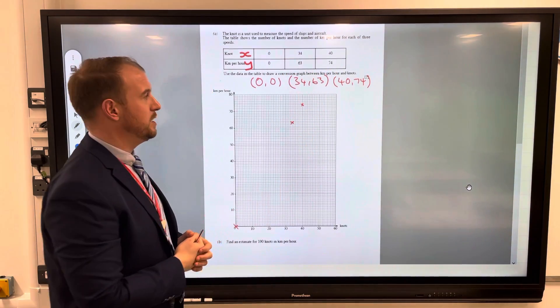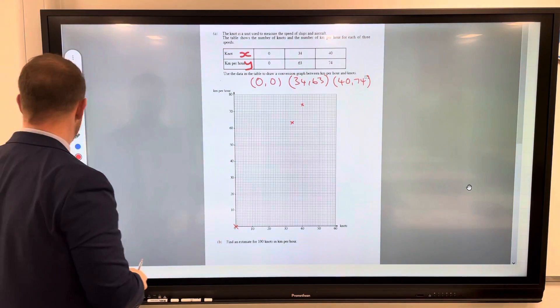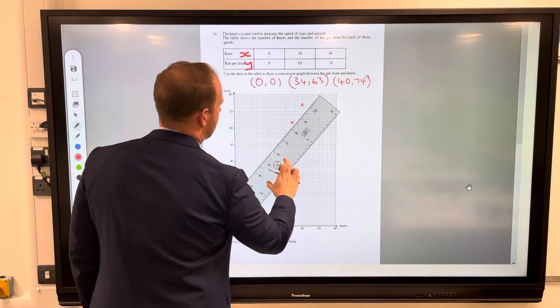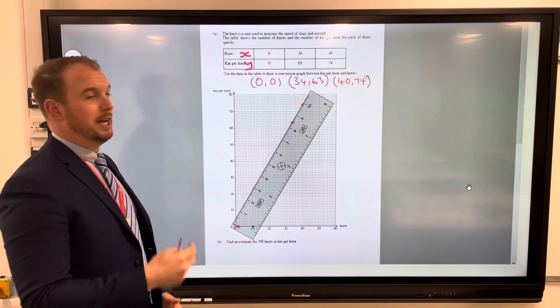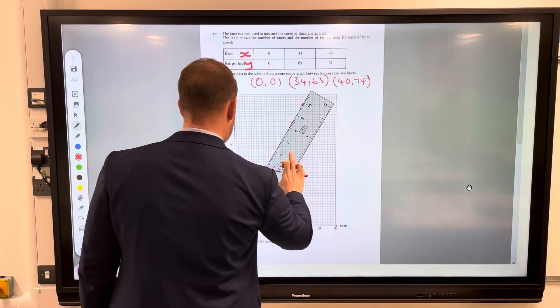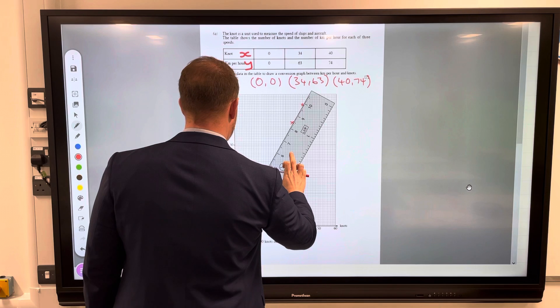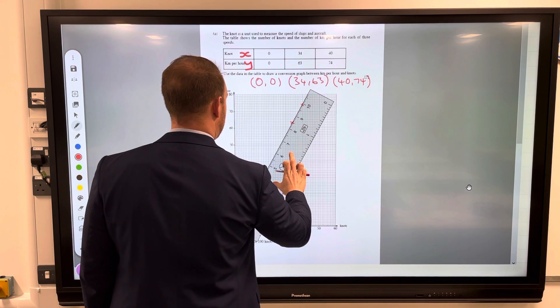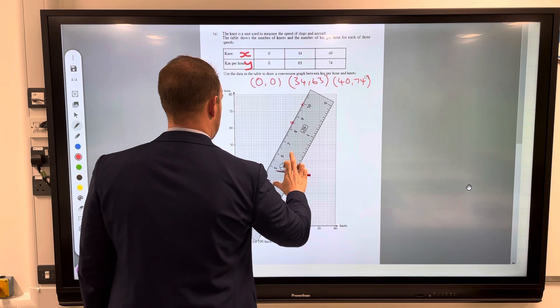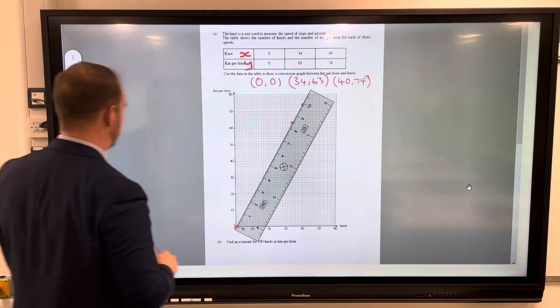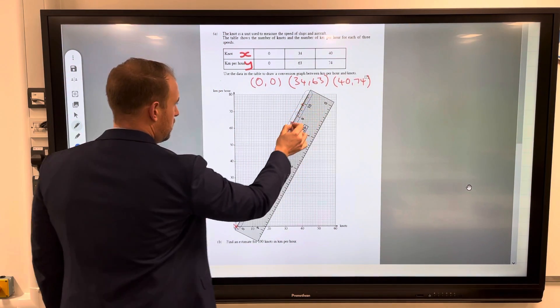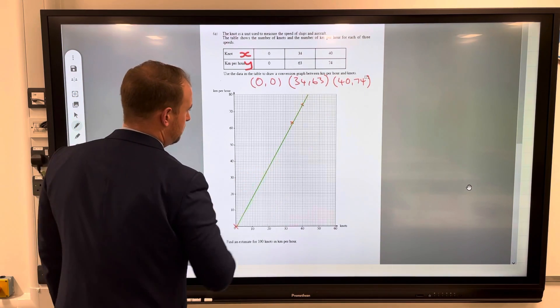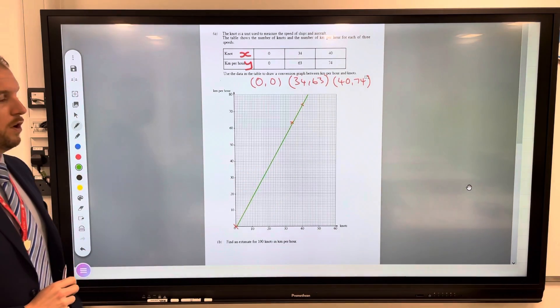Then we need a ruler. Conversion graphs are always straight lines. They are straight lines where we need to use the ruler very accurately. Excuse me for putting my back to you, but I'm going to make sure that it's as accurate as possible. I'm going to use a different color pen that's going to make it stand out.